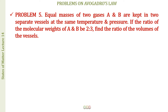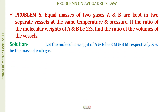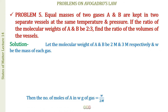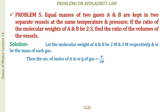At the same temperature and pressure, we apply Avogadro's law: equal volume means equal number of moles. Let the molecular weights of A and B be 2m and 3m. Since gases A and B have equal masses, let the mass of each be W, and find the number of moles of each gas.